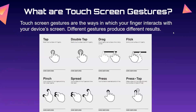What are touchscreen gestures? Touchscreen gestures are the ways in which your finger interacts with your device's screen. Different gestures produce different results. As you can see in the image, these are the different types of gestures: tap, double tap, drag, flick, pinch, spread, press, and press plus tap.